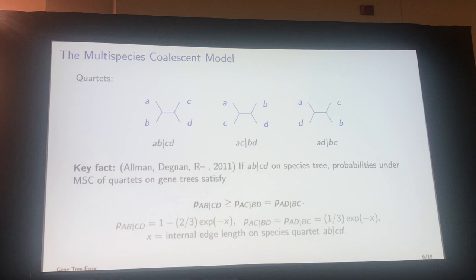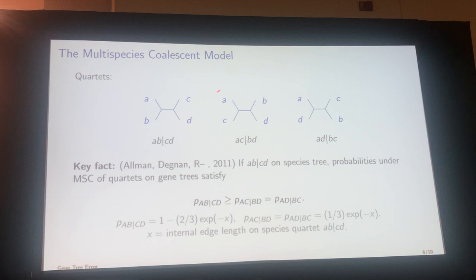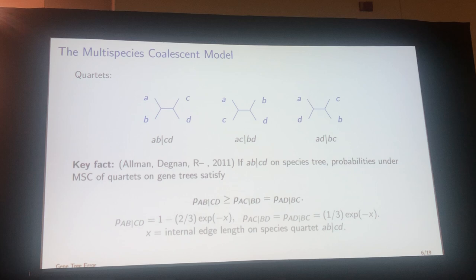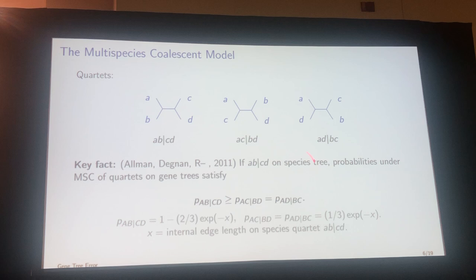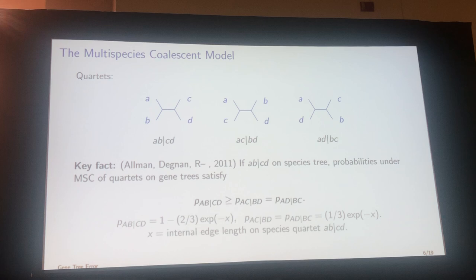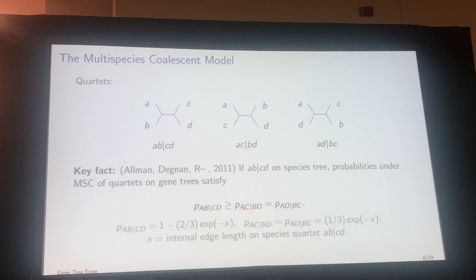A quartet is just an unrooted tree on four taxa. If you have four taxa a, b, c, and d, there are three possibilities for resolved trees. The key reason quartets are worth examining under the coalescent is this: if a and b are sisters on the species tree, then under the multispecies coalescent, the probability of having that same quartet displayed on a gene tree is greater than the probability of either of the other two quartets, and those other two are equal to each other.